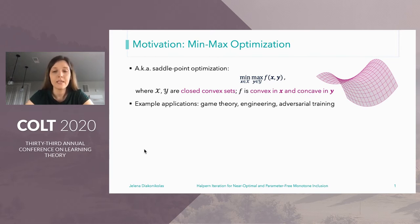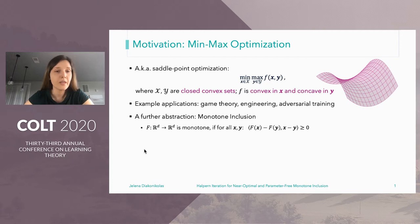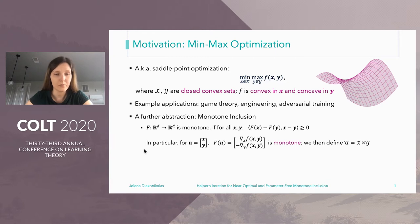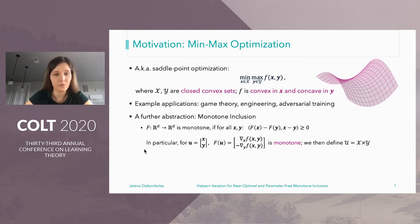The way we study these problems is through a further abstraction known as the monotone inclusion. Monotone inclusion is defined with respect to monotone operators — maps from R^d to R^d that satisfy this inequality for all x and y. For our motivating min-max optimization problems, we can construct a monotone operator by stacking on top of each other the gradient with respect to the convex part of the function f and the negative gradient with respect to the concave part. This newly constructed operator, capital F of u, is well known to be monotone.